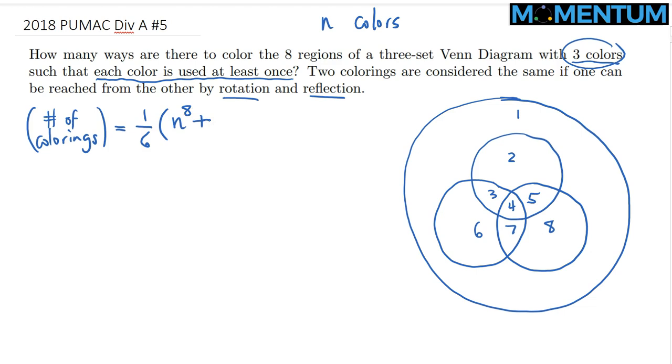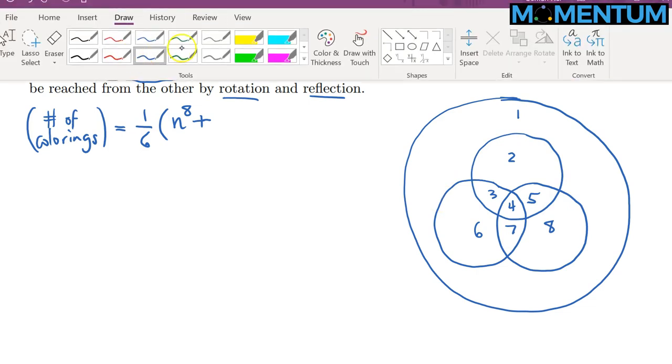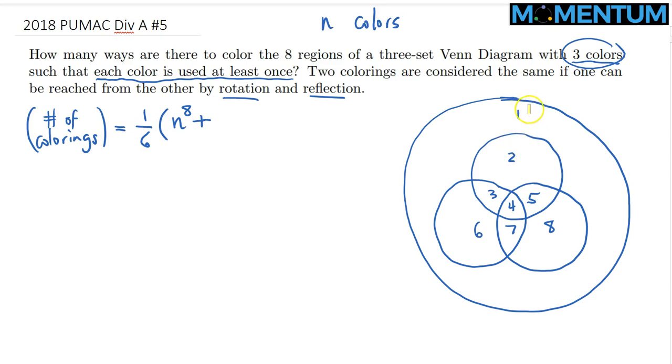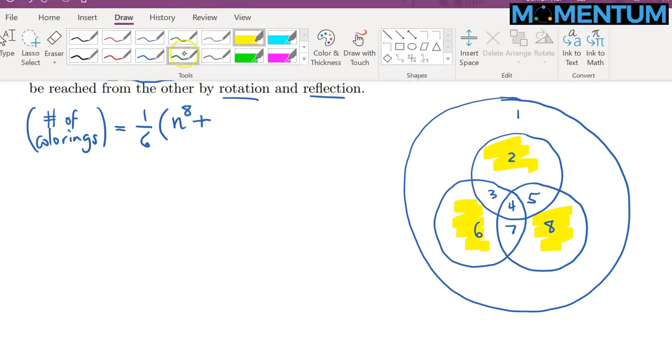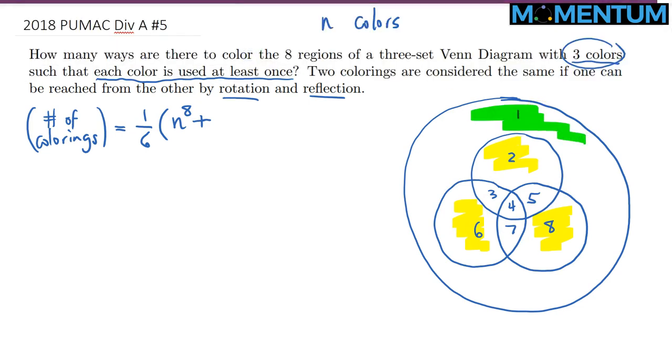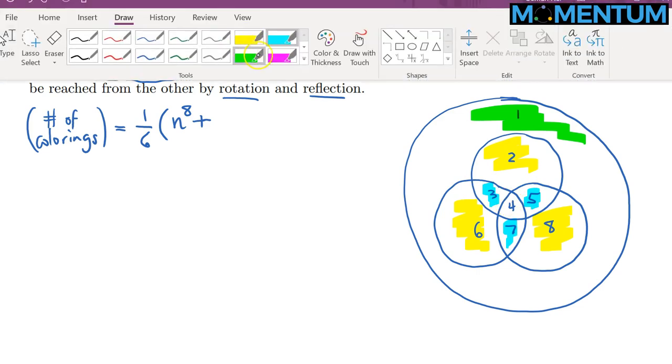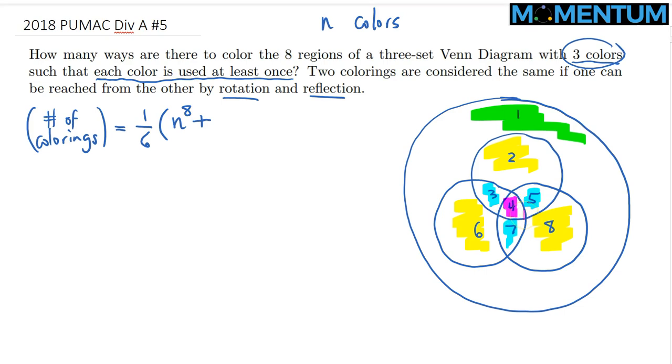Then, we need to consider the two rotations, namely 120 degree and 240 degree rotations. For those rotations, we just realize that if we need to color code. So, region one will be mapped to itself. Region two will be mapped to eight. Eight will be mapped to six. Six will be mapped back to two. So, this is a cycle. Like I said earlier, this is by itself a cycle.